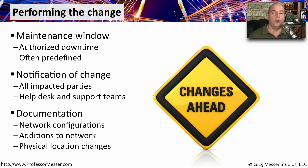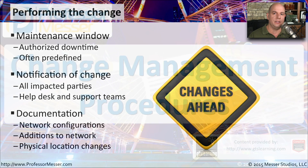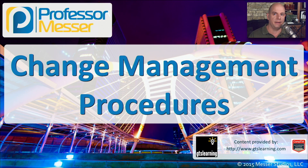The change control process almost always includes an extensive amount of documentation. Just because you know what the change is going to be doesn't mean anyone else will understand. You have to completely document with detailed information — perhaps some network diagrams and documentation over what versions might be updated or what might be changed in a configuration — so that everyone understands the impact and scope of the change you're making.